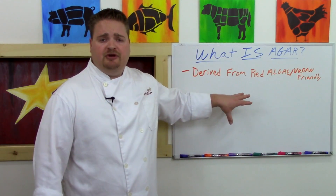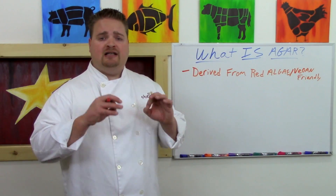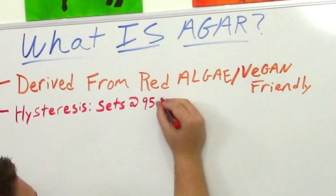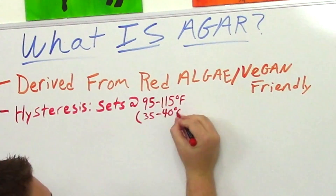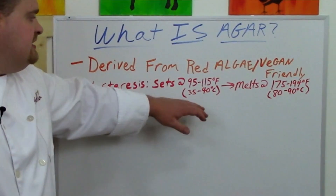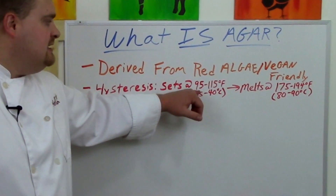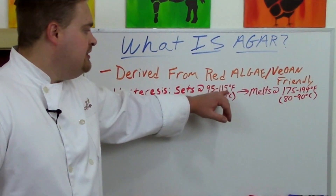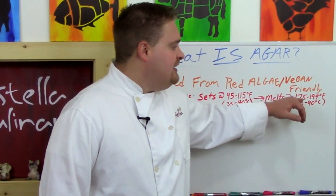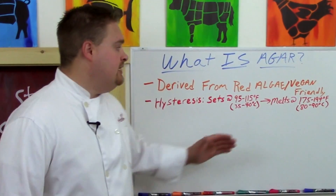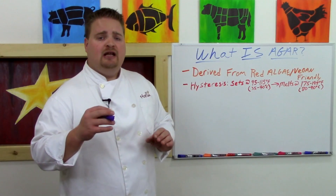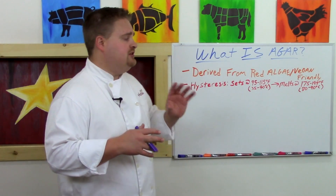One of the unique properties of an agar gel is what's called hysteresis. Hysteresis means there's a large differential between the temperature at which agar sets and the temperature at which agar melts. Agar actually sets at about 95 to 115 degrees Fahrenheit and melts at 175 to 194 degrees Fahrenheit — a very large differential between the setting temperature and the melting temperature.